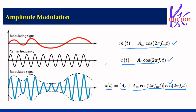If the modulation index is less than 1, it is under modulation, as shown in figure 3. If the modulation index equals 1, it is exact modulation. If it is greater than 1, it is over modulation. For under modulation or exact modulation (less than or equal to 1), the information can be retrieved at the receiver. If the modulation index is greater than 1, the information cannot be retrieved because distortion or interference occurs.